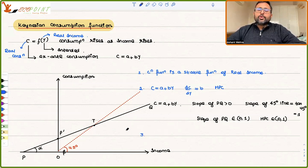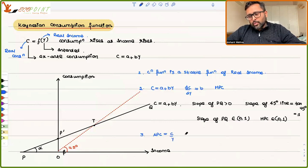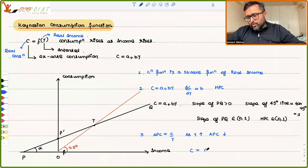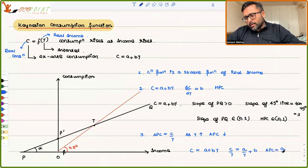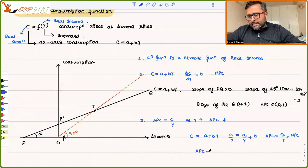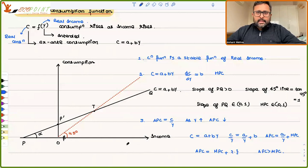Then Keynes said that as income increases, APC is going to fall. APC is C/Y. From C = A + BY, dividing by Y gives APC = A/Y + B, which means APC = A/Y + MPC. Since A/Y is positive, APC is always greater than MPC. So as income increases, average propensity to consume falls, and MPC is less than APC.